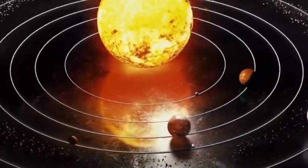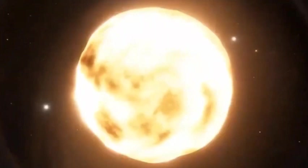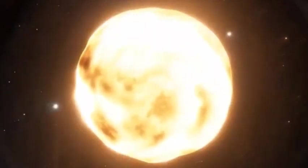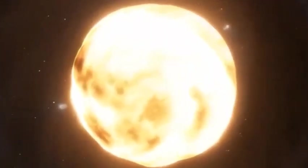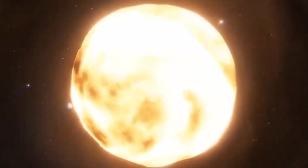Betelgeuse, around 650 light-years away in Orion, isn't just any star. It's a red supergiant, incredibly bright, over 100,000 times brighter than our sun.